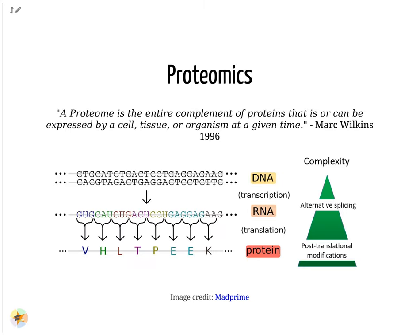Proteins are macromolecules that have many important functions in a cell. Protein coding genes are transcribed into mRNA, which is translated into amino acids. The amino acid chain forms secondary, tertiary and quaternary structures to obtain a functional protein. One gene may generate different proteins due to alternative splicing and post-translational modifications.